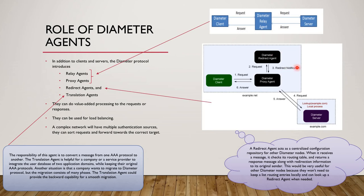Because the proxy agent lacks routing information, it always does a lookup on the redirect agent. The redirect agent has a stored database of server addresses. So the first request goes from the Diameter client to the proxy agent; the proxy agent queries the redirect agent; once it gets the server's address it forwards the message to the Diameter server, which then processes and replies. The translation agent's responsibility is to convert a message from one AAA protocol to another.